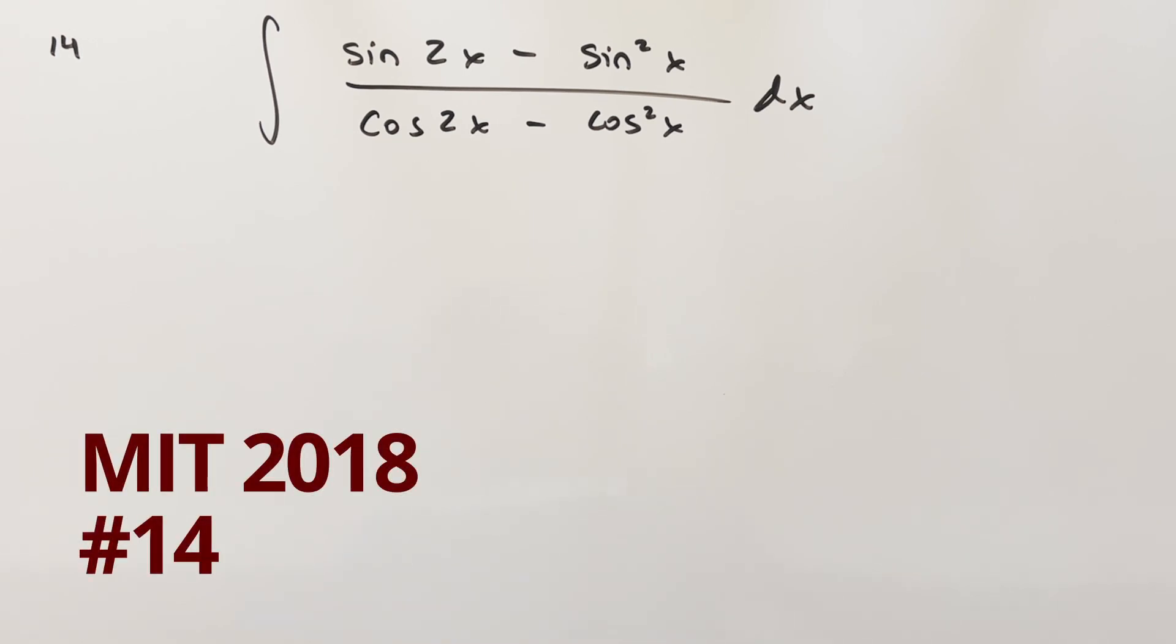Okay, we have to take another integral. This one's from the MIT Integration B, 2018, number 14. We have the integral sine 2x minus sine squared x over cosine 2x minus cosine squared x dx.